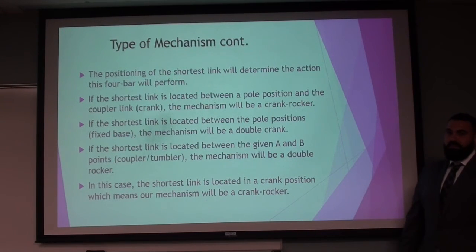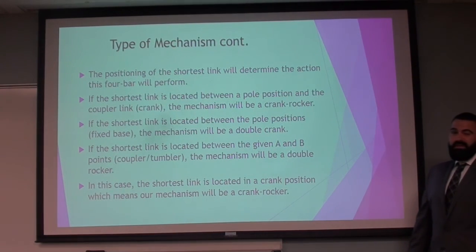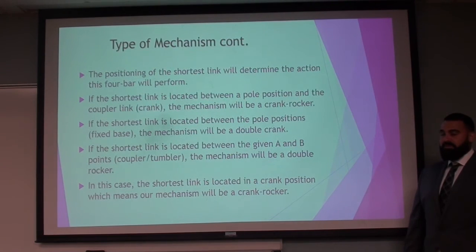Depending on the positioning of the shortest link, we can have a different operation. If the shortest link is located in a crank position, you'll end up with a crank rocker. If the shortest link is located between the pole positions, being the fixed link, then you'll have a double crank. And if the shortest link is located in the coupler position, then you're going to end up with a double rocker. In this case, we have a crank rocker.